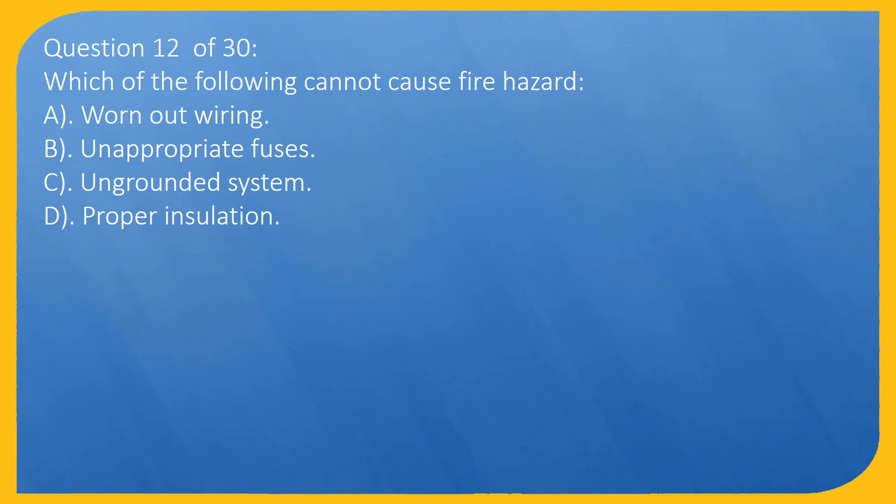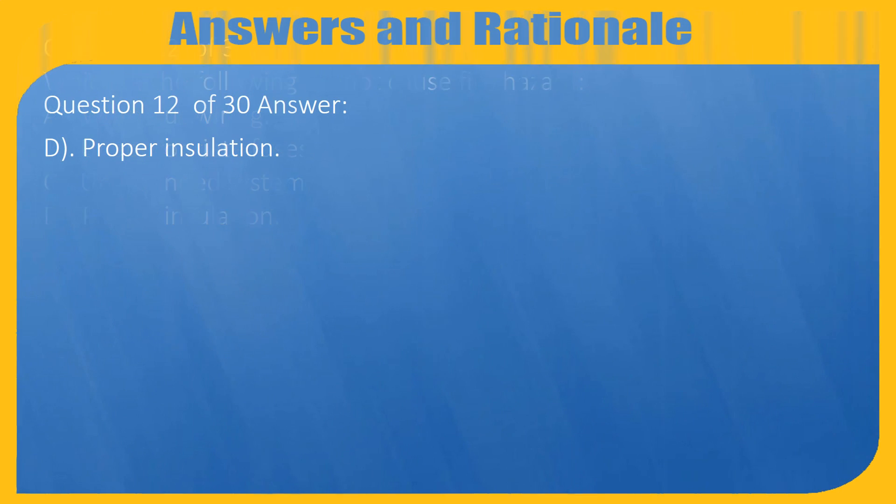Question 12 of 30: Which of the following cannot cause fire hazard? A. Worn out wiring, B. Inappropriate fuses, C. Ungrounded system, D. Proper insulation. Answer: D. Proper insulation.